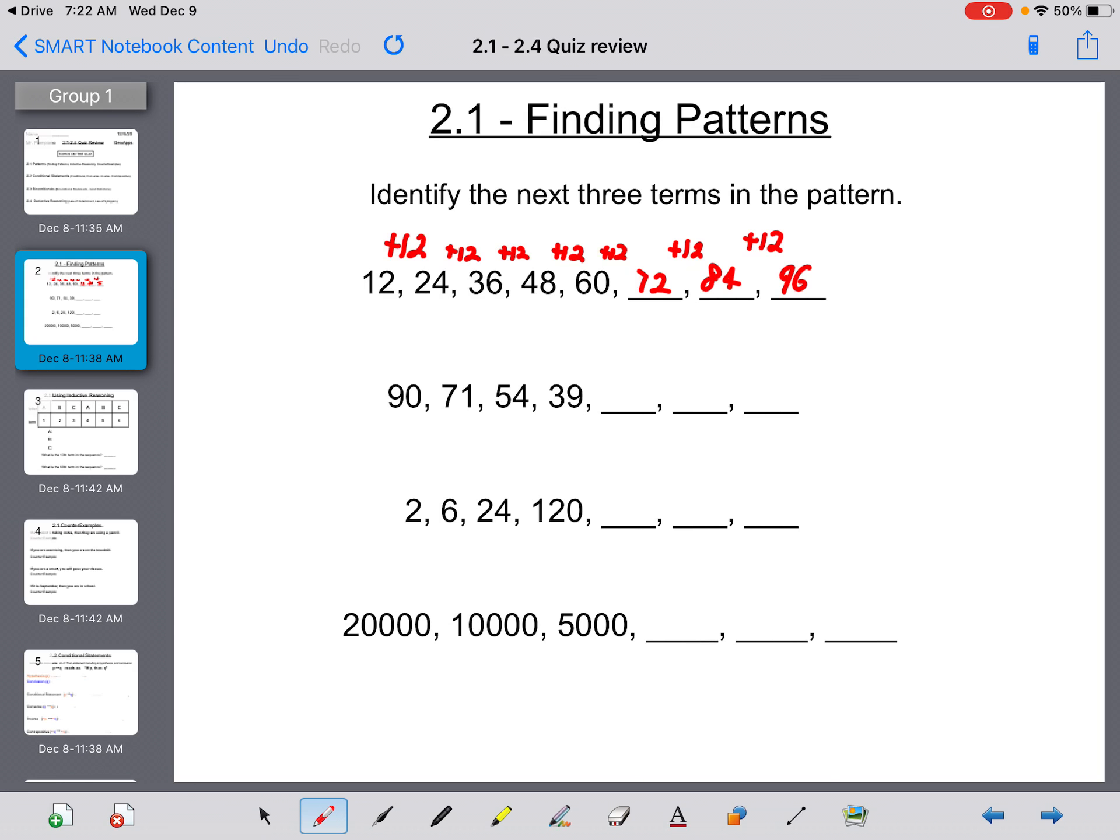If you take a look at your next one, we go from 90 to 71 to 54 to 39, and we have to find some sort of pattern here. We can't divide, so this has to be subtraction. 90 minus 19 makes 71, 71 minus 17 makes 54, 54 minus 15 makes 39. So your next subtraction would be 13. 39 minus 13 gives you 26, 26 minus 11 gives you 15, and 15 minus 9 gives you 6. So your pattern here was that the subtraction is decreasing by 2 each time.